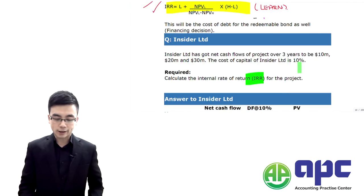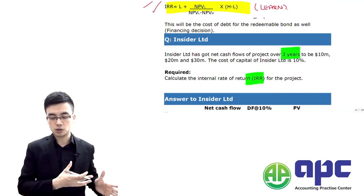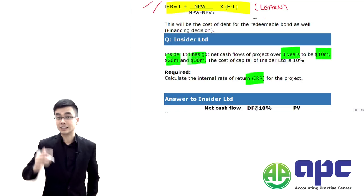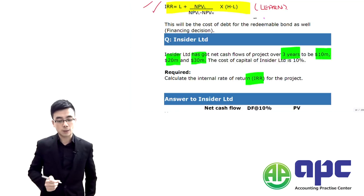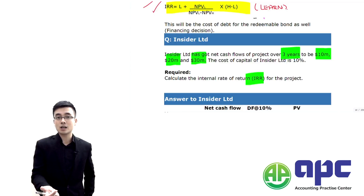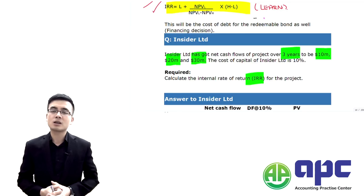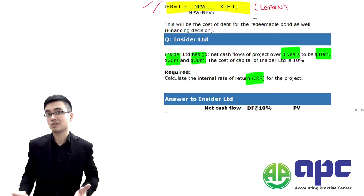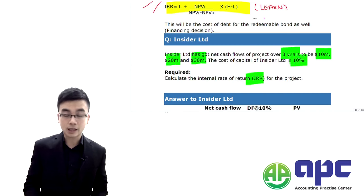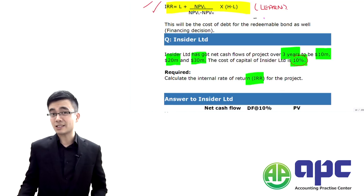Insider Limited has cash flows for the project over three years into the future — not related to the past. We predict cash flows of 10, 20, and 30 in each year. The IRR calculation, from the performance perspective, is also based upon the net present value, so we have to apply discounting to our calculation. The cost of capital of the company is 10%, so we can discount those cash flows.